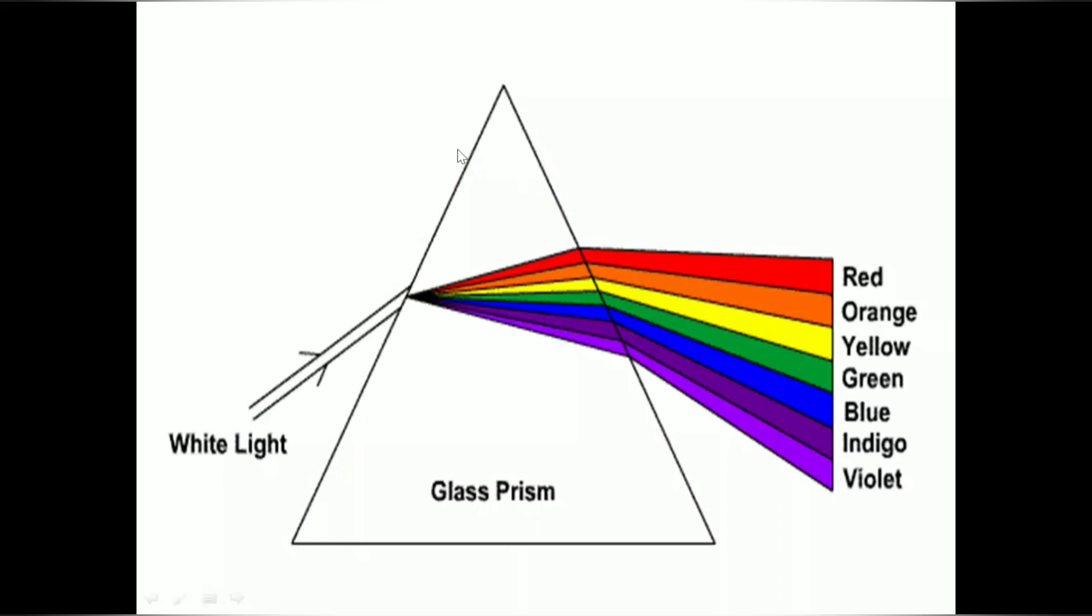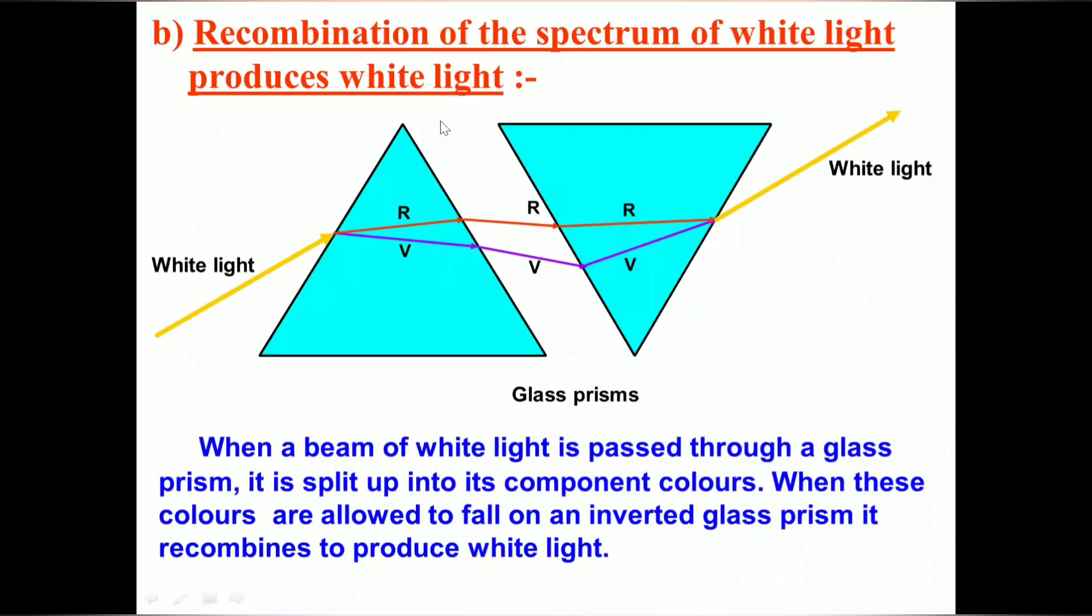Next, we studied the recombination of the spectrum of white light. This experiment was done by Newton. He chose two prisms, one kept lateral and another laterally inverted. When white light passes through one prism, it splits into seven colors - red and violet, with five other colors in between.